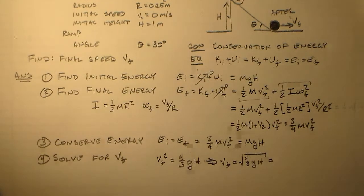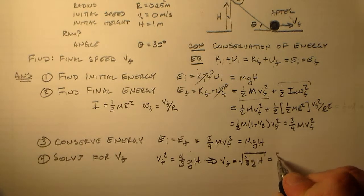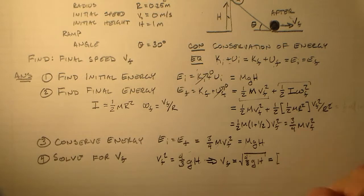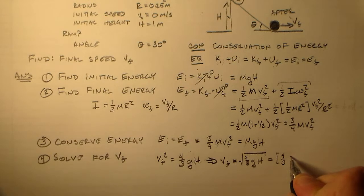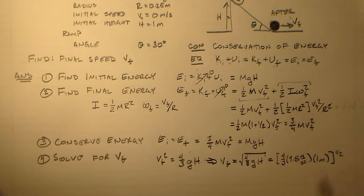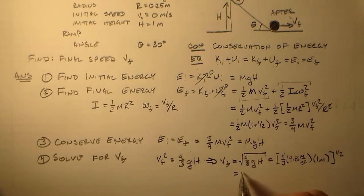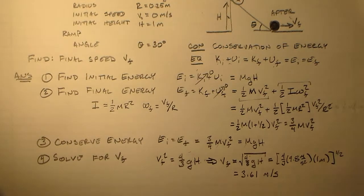And now it's time for numbers. I know you hate numbers, but numbers we got. So we have this four divided by three times 9.8 meters per second squared, times one meter. And that's going to be equal to 3.61 meters per second. So that's the final answer. That's what we're looking for.